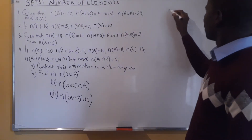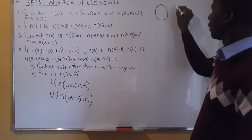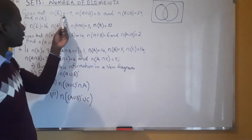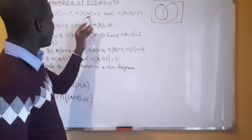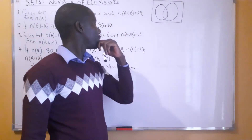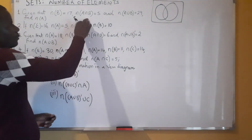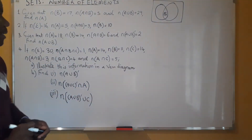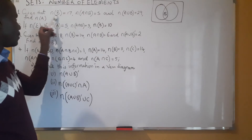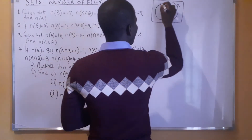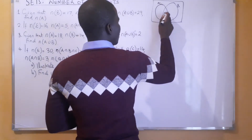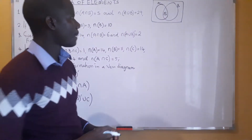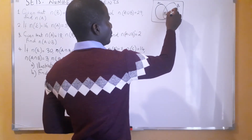Let's come up with a Venn diagram for the first one. We are told that the number of elements in set B should be 17, in the intersection of A and B should be 5, and then the union of the two sets should be 29. Now we have to start with the intersection — in the intersection we should have 5 elements. Then the number of elements in set B alone should have 17 elements, so you subtract 5 from 17 and you get 12 here.